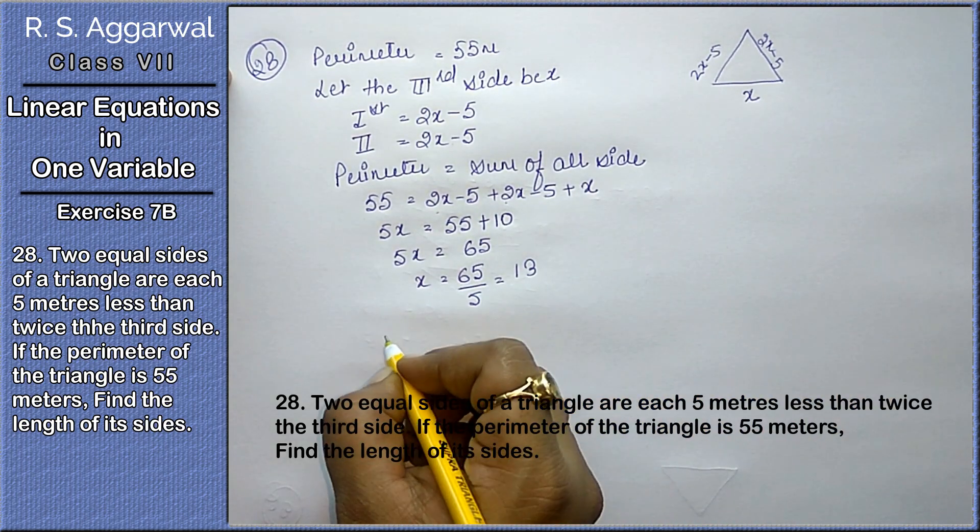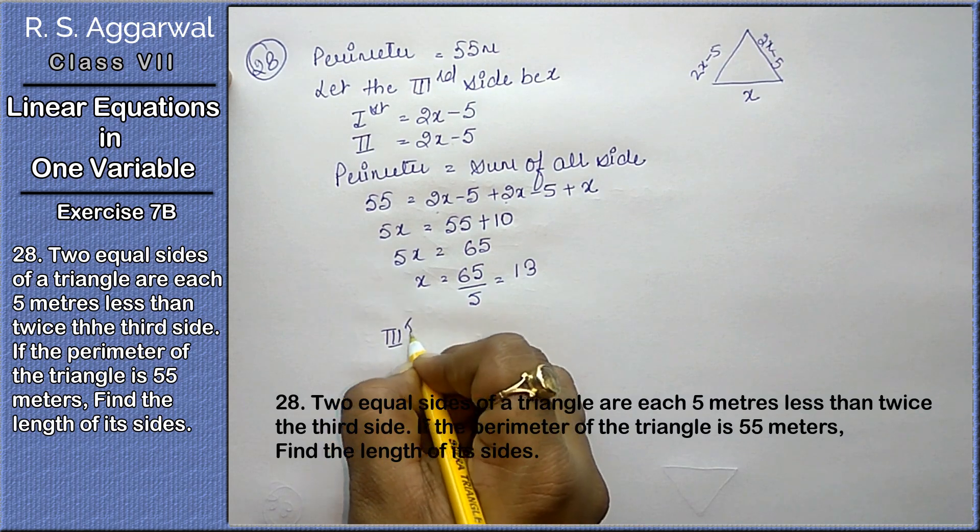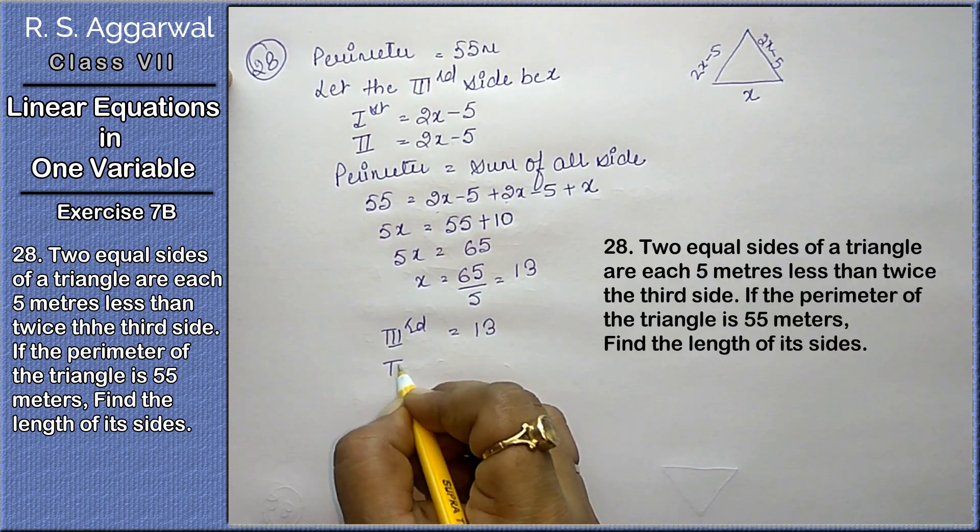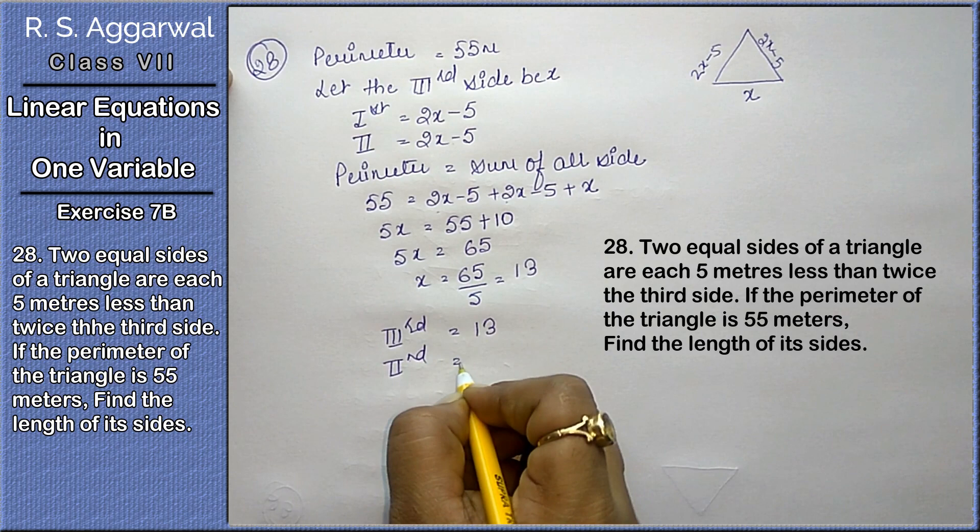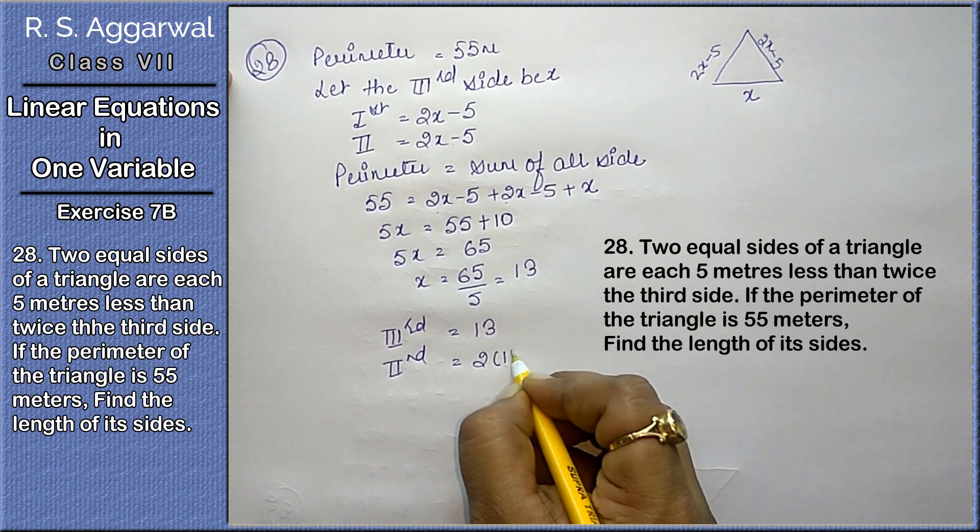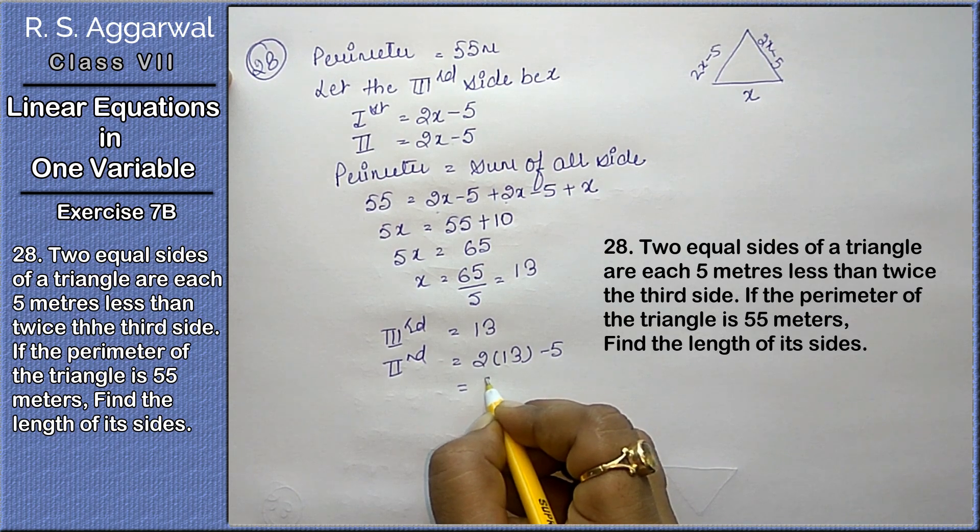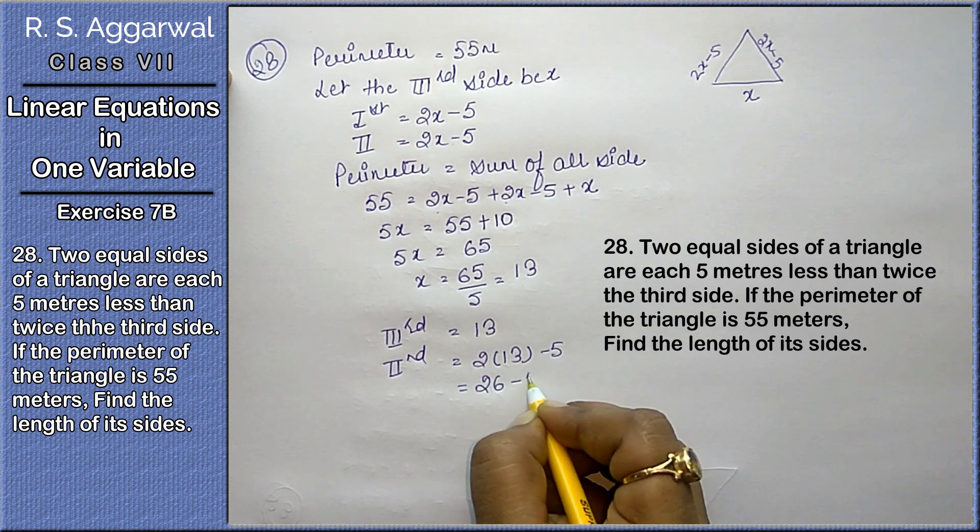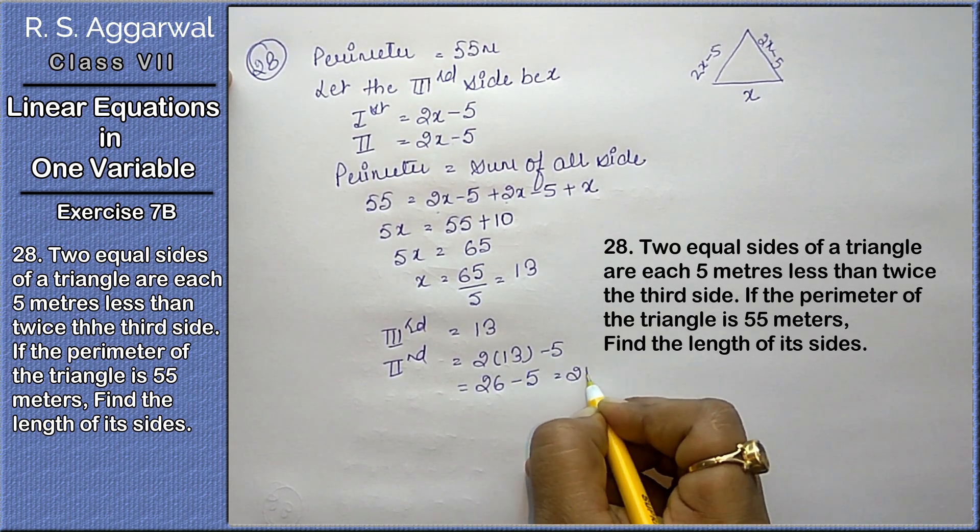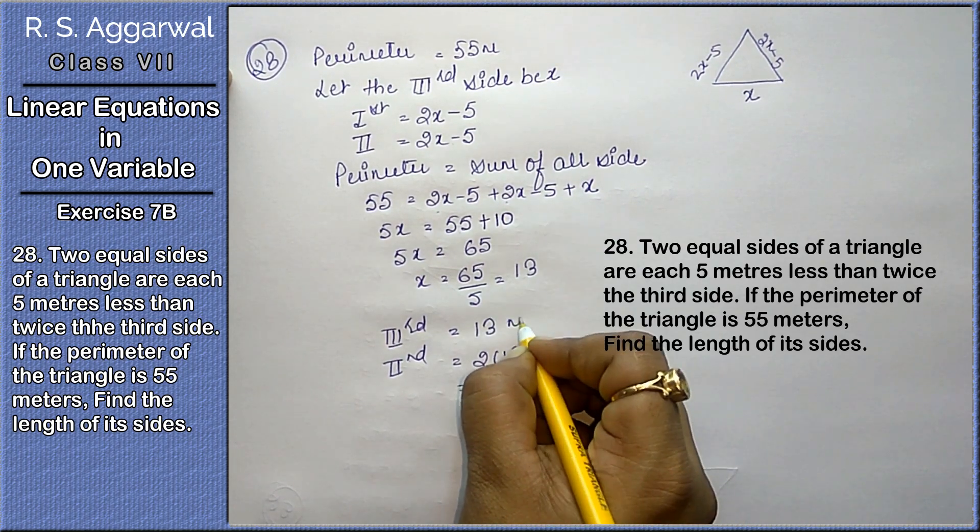Now, third side is 13. Second side will be 2 into 13 minus 5. It will become 2 into 13 is 26 minus 5 is 21 centimeters.